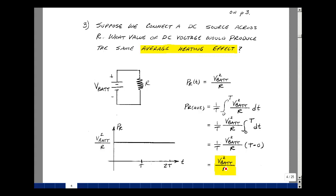But again, you can apply our formula. 1 over the period, integral over a period of our function dt. Again, it's not a function of time, so pull that out. I get the integral of 1 dt, which is just t. Upper limit minus the lower limit would be capital T, the period minus 0. The t's cancel. And I get v bat squared over r.